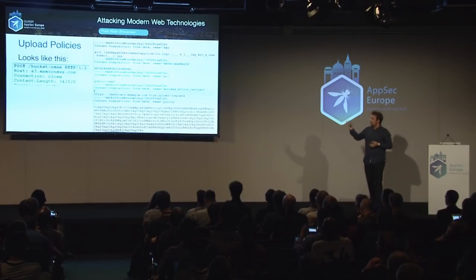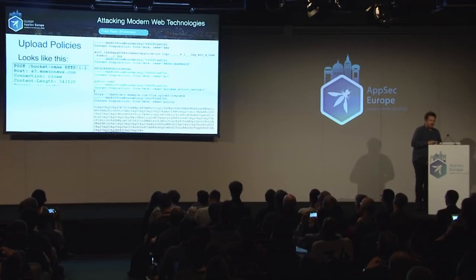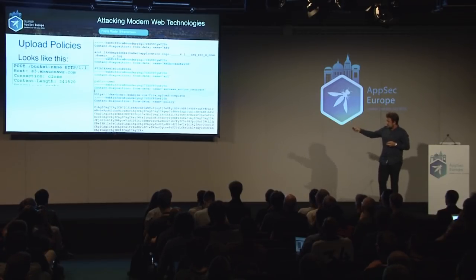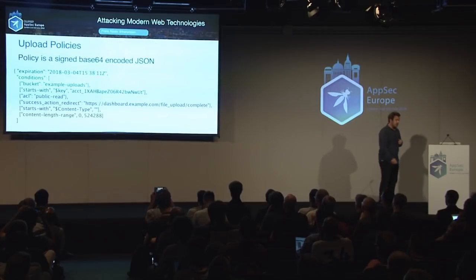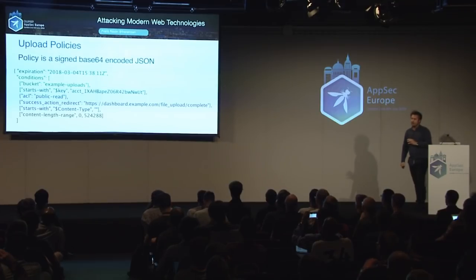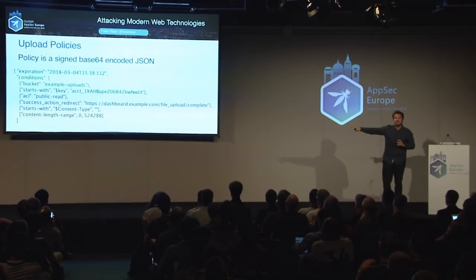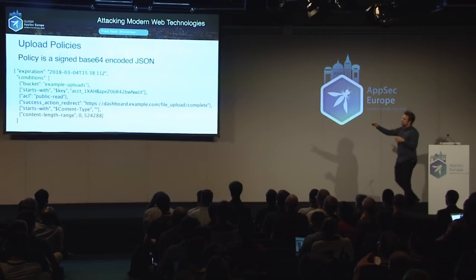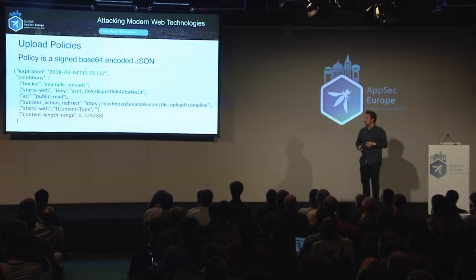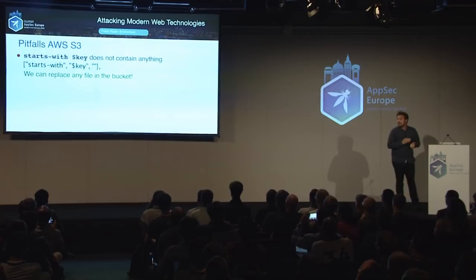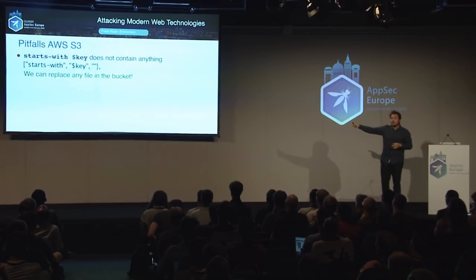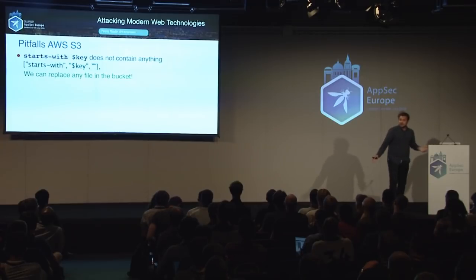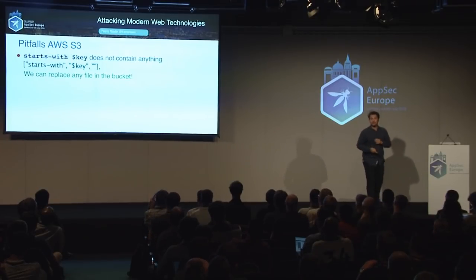A policy upload looks like this: it's basically posting to an S3 bucket with a policy, signature, access key, and some other parameters. The policy is basically a base64-encoded JSON containing all the rules for the file being uploaded. I'd say probably every line in this policy can be abused, which is quite bad. For example, if you have 'starts-with key' with an empty starts-with, that means you can replace any file in the bucket — the policy says you can place a file wherever you want in the bucket.